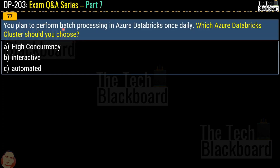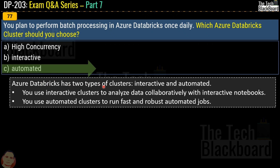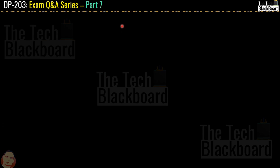Question 77: you plan to perform batch processing in Azure Databricks once daily. Which Azure Databricks cluster should you use? Options are high concurrency, interactive, or automated. The correct answer is option C, automated. Azure Databricks has two cluster types: interactive clusters are used to analyze data collaboratively with interactive notebooks, while automated clusters run fast and robust automated jobs. Since we want to perform batch processing once daily, this is an automated job, so we choose the automated cluster.